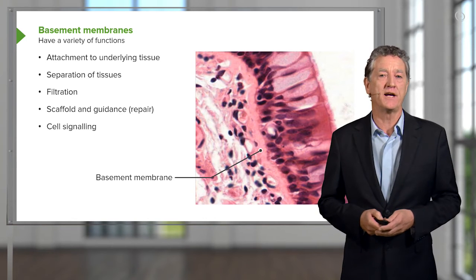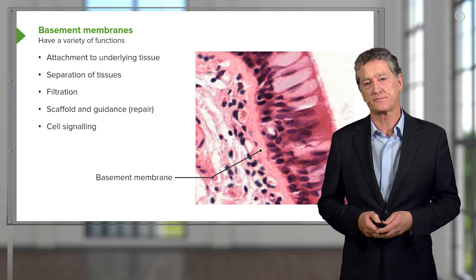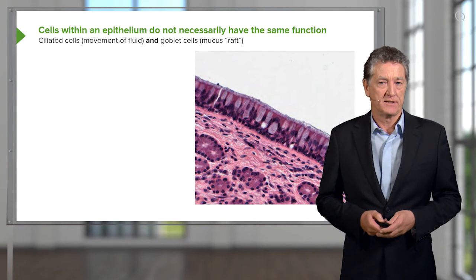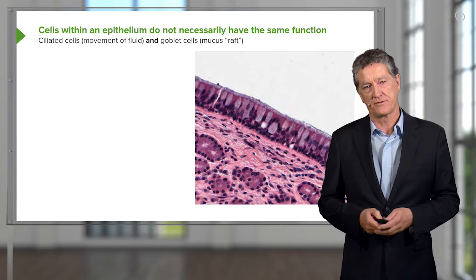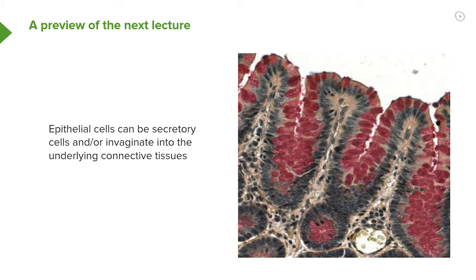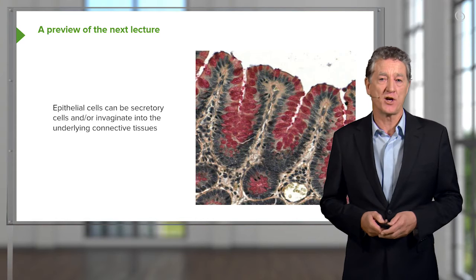You can see listed there a number of very important functions that these basement membranes fulfil in the body. Some epithelia contain a number of different sorts of cells with different functions. Here is an example of where epithelial cells have invaginated, or grown down under the surface, into the underlying connective tissue or lamina propria. These cells become very specialised to be secretory cells or glandular tissue, which will be the subject of a later lecture.